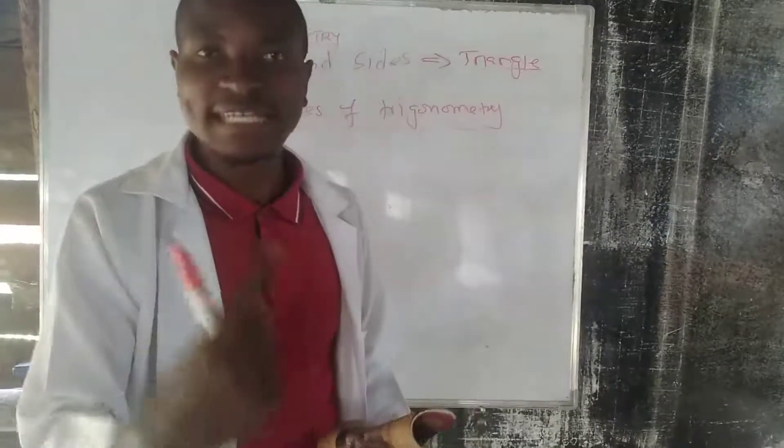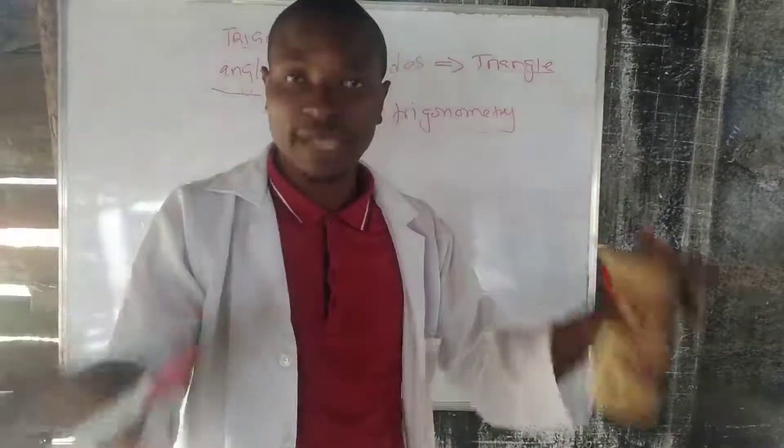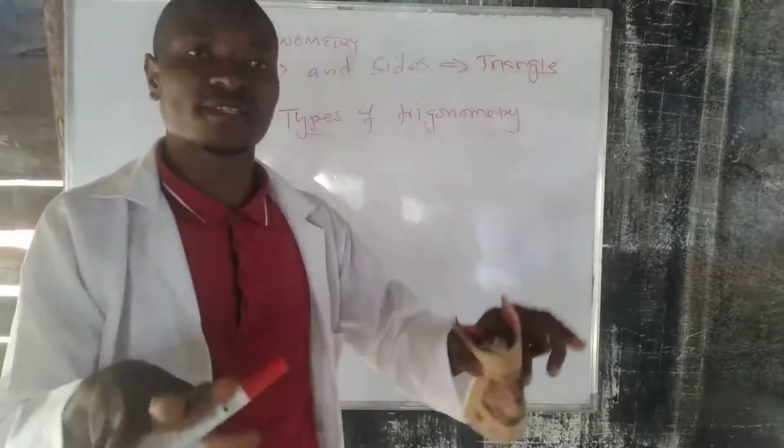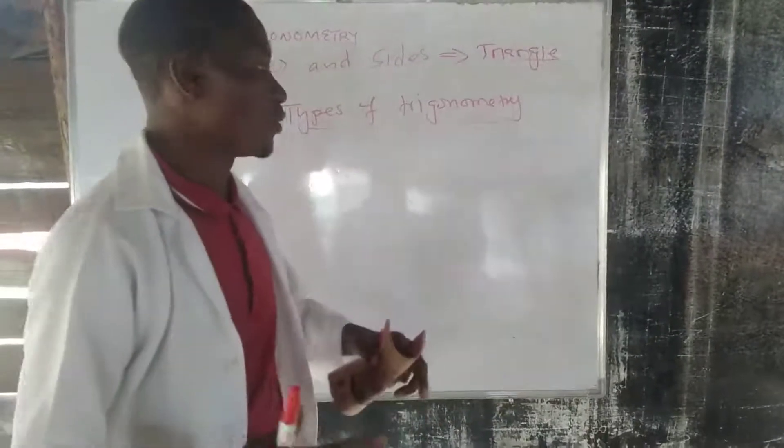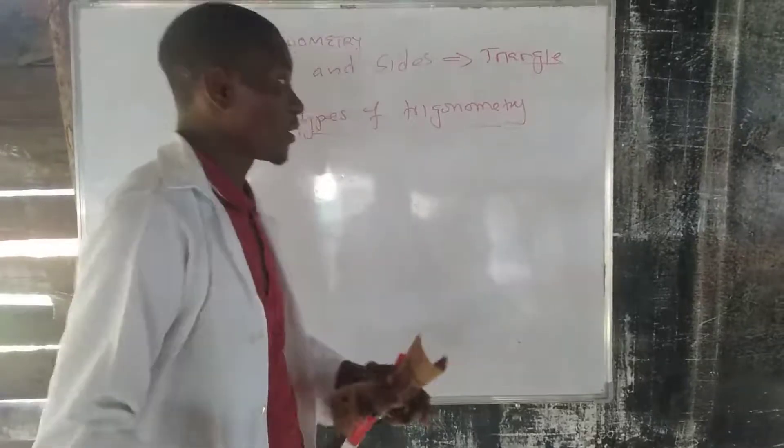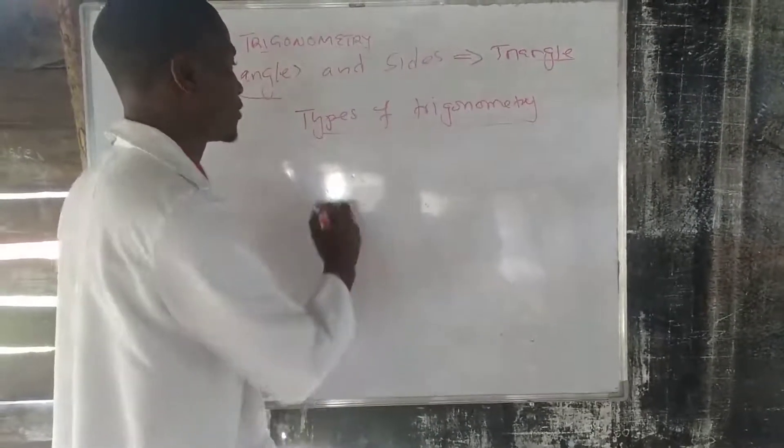But the way we get to solve this trigonometry is that we solve it in two types. So, the first type is what we look at today. And, of course, I believe we'll be able to finish it.